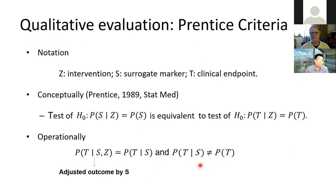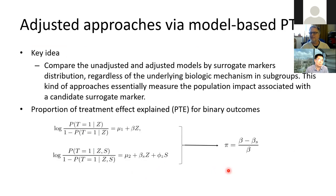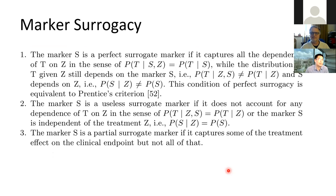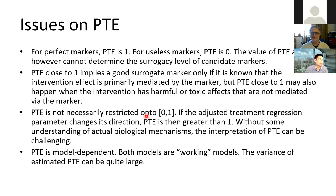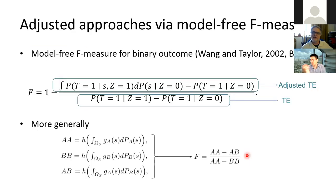Question from Fei: what does it mean that PTE may be close to one if the intervention has toxic effects? The answer is that the intervention may have some other effect not captured by the surrogate marker S — meaning the marker doesn't account for those additional intervention effects on the primary outcome. So if we look at the adjusted treatment, the regression parameter changes direction, and without understanding the actual biological mechanism, interpretation of PTE can be quite challenging.